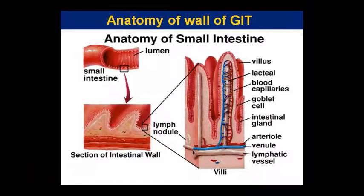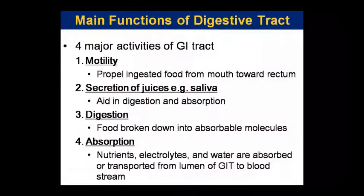Now let us look at the anatomy — specifically the wall of which the small intestine is made. Inside the small intestine is the lumen. The wall of the small intestine is shown in this diagram. In the wall, there are lymph vessels, arterioles, and venules. There are also intestinal glands and goblet cells, which are responsible for secretion of mucus. There are blood capillaries and lacteals, and this structure is called a villus.